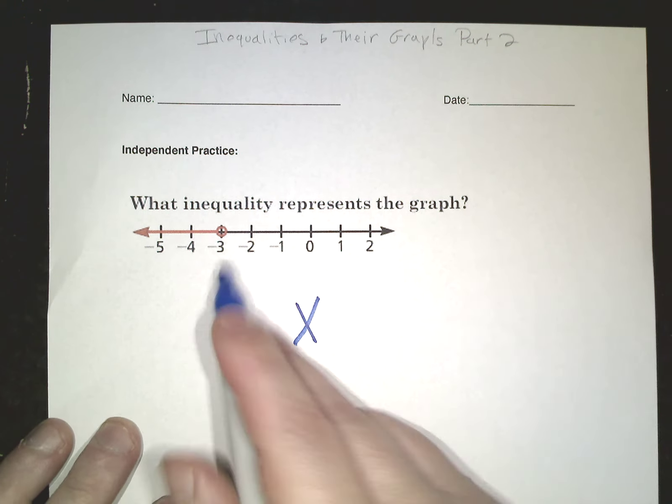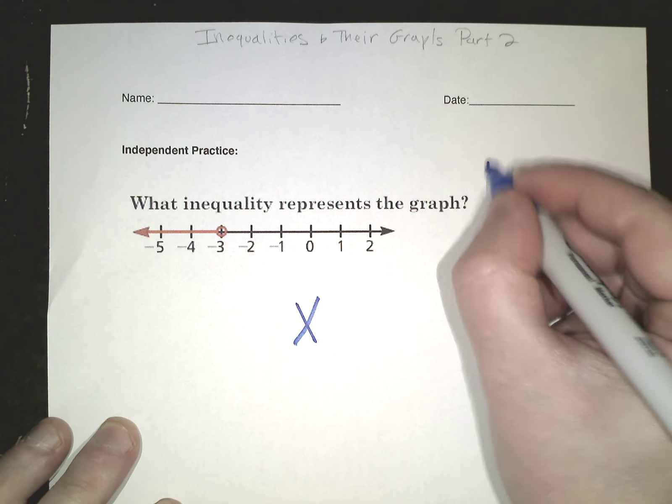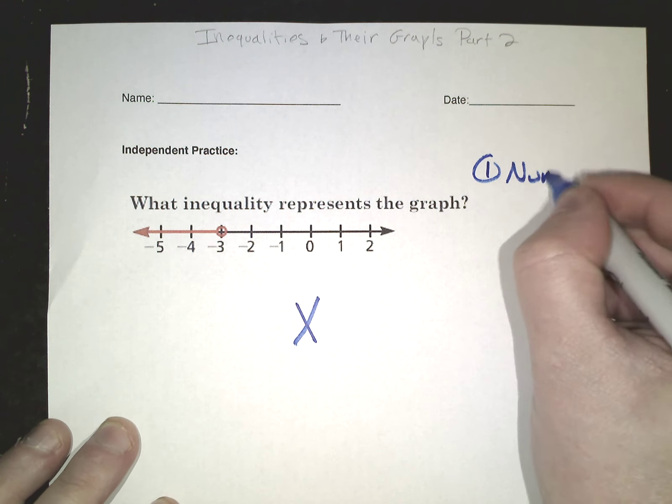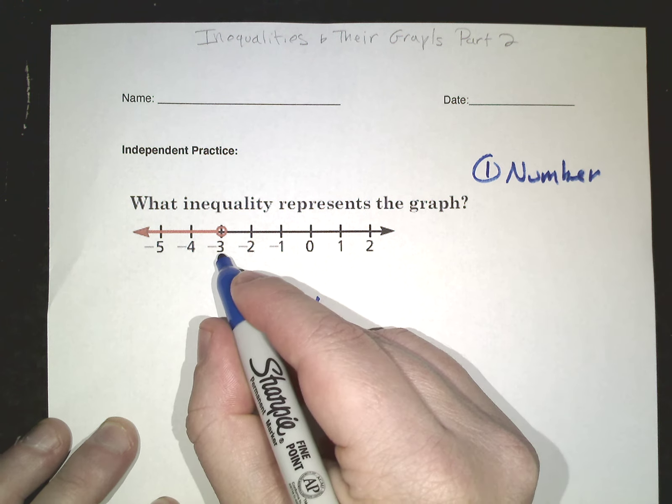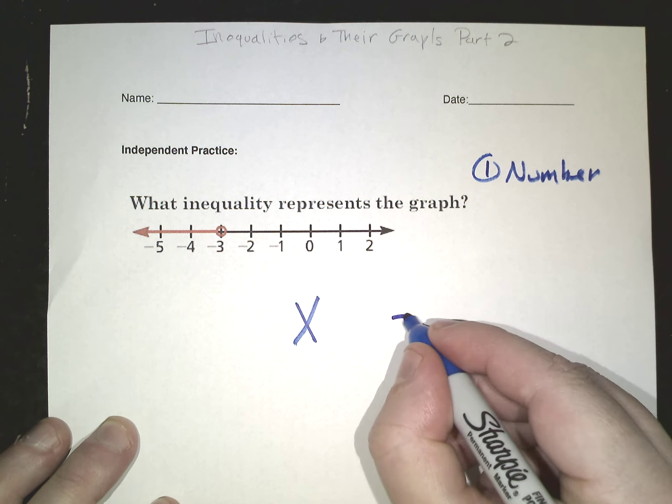So I look at this. So what's my number? First step, the number. Well, there's only one number that's any value here. It's negative 3. So I put it here.